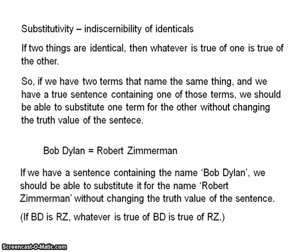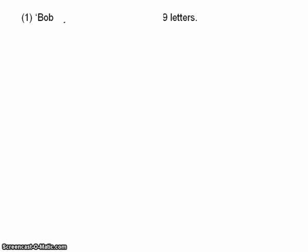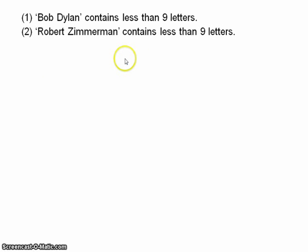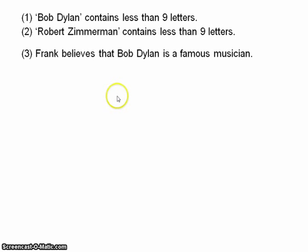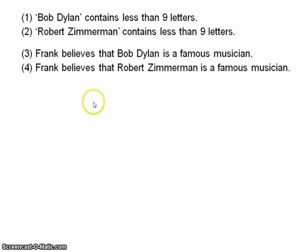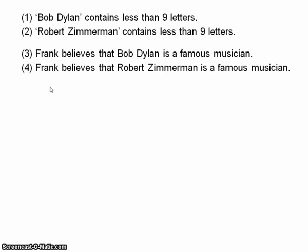But it's actually very easy to find counterexamples to this principle. Consider: (1) 'Bob Dylan' contains less than nine letters. (2) 'Robert Zimmerman' contains less than nine letters. Consider also: (3) Frank believes that Bob Dylan is a famous musician. (4) Frank believes that Robert Zimmerman is a famous musician. One is true, two is false. It's possible for three to be true and four to be false. We can imagine that Frank has heard of Bob Dylan but has never even heard the name Robert Zimmerman. So we have two things that are identical — Bob Dylan is Robert Zimmerman — and yet substituting the names has changed the truth value of the sentence.